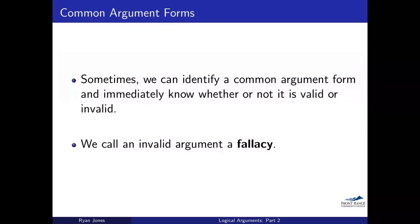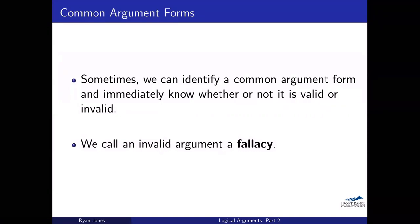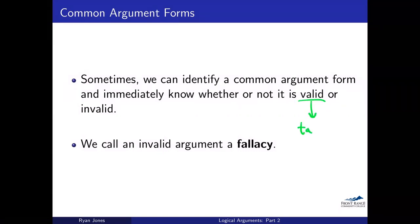We saw some arguments last time. We looked at a couple of examples, you've worked on some on the worksheets, and you've made giant truth tables for them — sometimes just obscenely long truth tables. You found out whether or not they're valid, whether or not they're a tautology. Remember that if it's ever possible for an argument to be false, it's invalid, because the argument needs to hold true all the time.